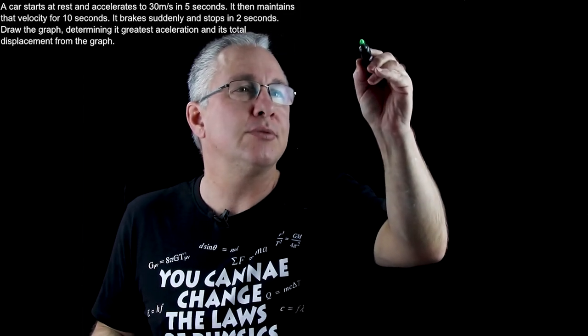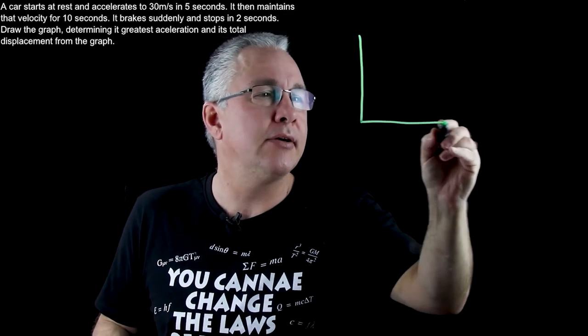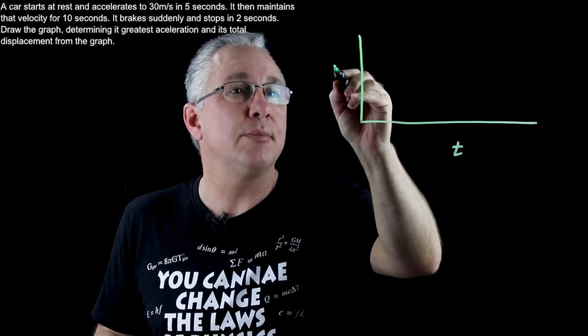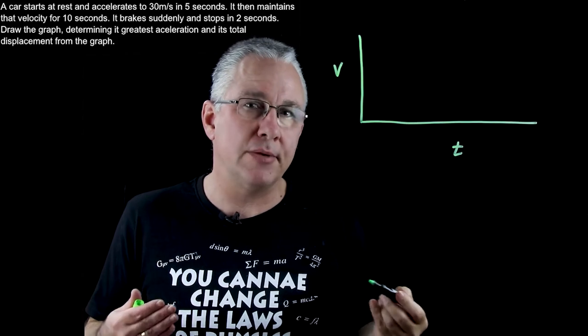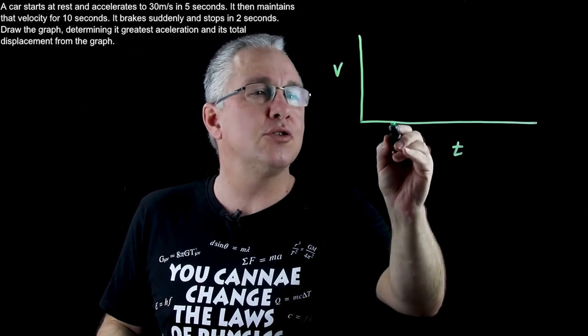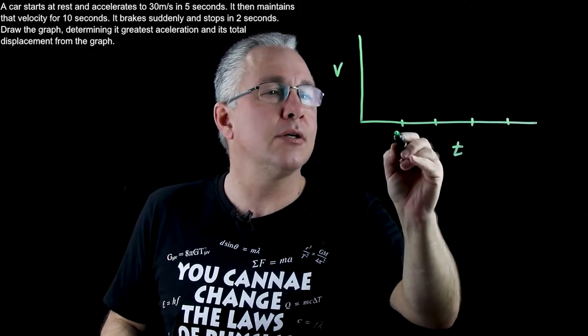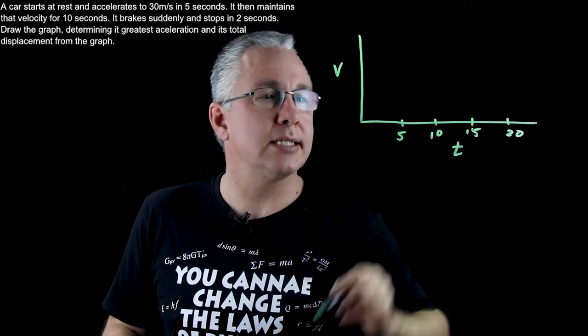And probably the best way to do this is to draw a velocity time graph. So we're going to draw our axis and here our axis is going to be time on this axis and velocity on that axis. Now if you look at the total time, the total time is around 17 seconds so we're going to divide this up into up to 20 seconds like so.